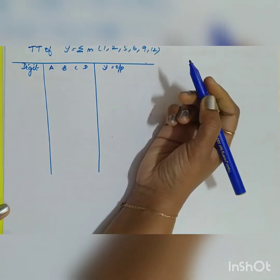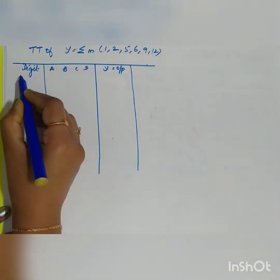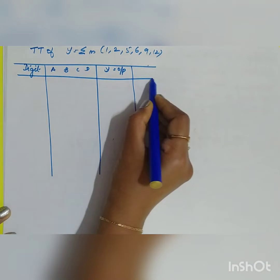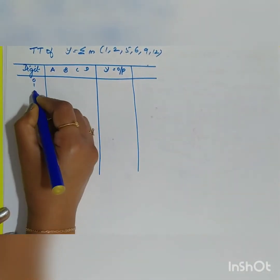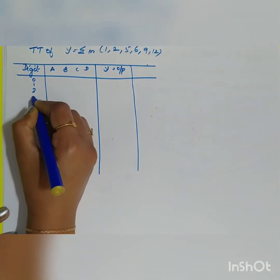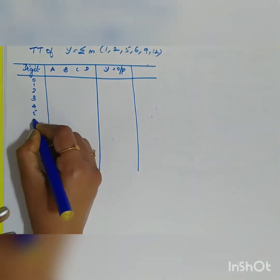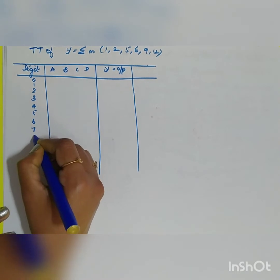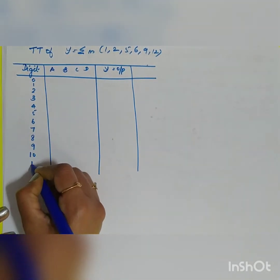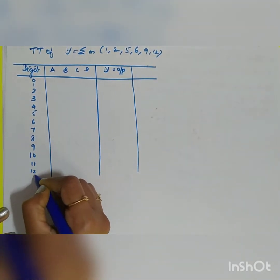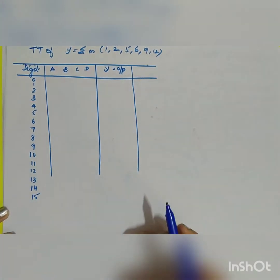Y is the output. The combinations go from 0 to 15: 0, 1, 2, 3, 4, 5, 6, 7, 8, 9, 10, 11, 12, 13, 14, 15. The corresponding binary values for the inputs A, B, C, D are filled in for each row of the truth table.